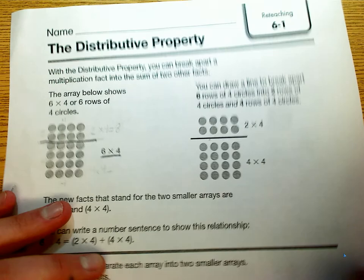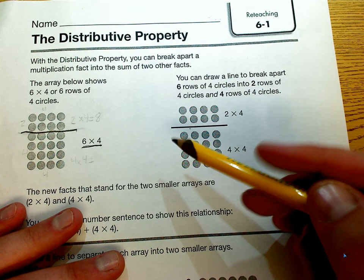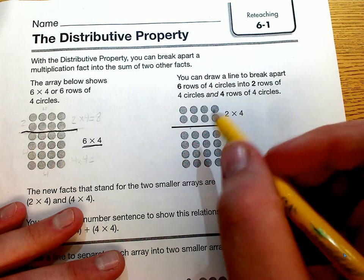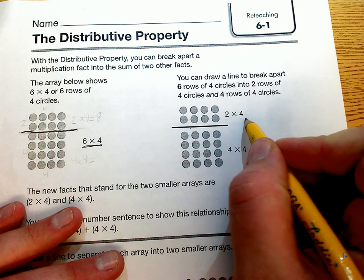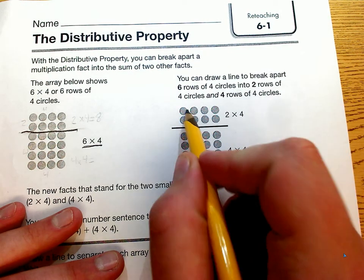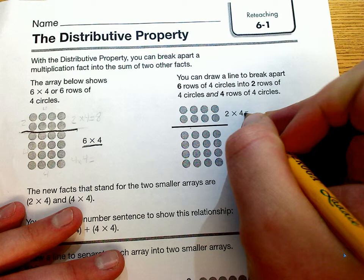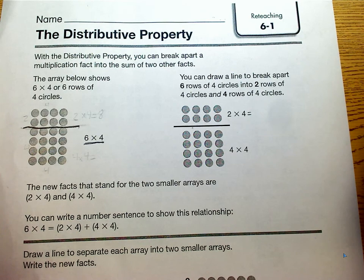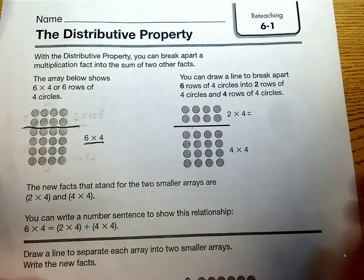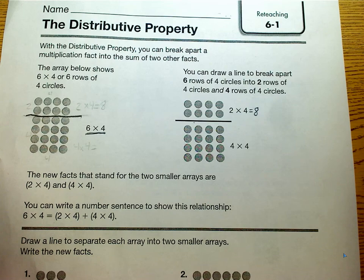What this does is it builds two arrays now instead of one large one that's kind of scary. So the top one is 2 times 4, which is two rows of 4 — 1, 2, 3, 4, and 2 rows. And we can use a 2 strategy for that. We can skip count by 2s: 2, 4, 6, 8, and we can say that 2 times 4 is 8.